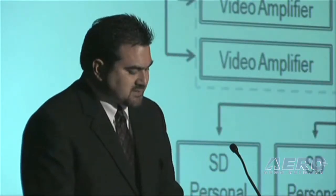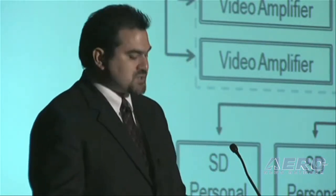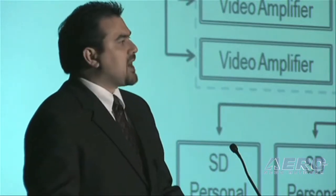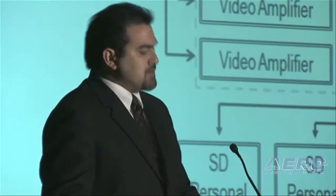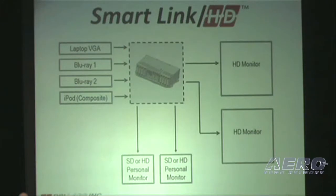A typical HD system consists of a maze of components to route and distribute various video types and sources, including VGA and HDMI splitters, video amps, buffers, and selectors. However, the SmartLink HD solution consolidates this entire matrix into one single unit, saving you space, weight, and money.